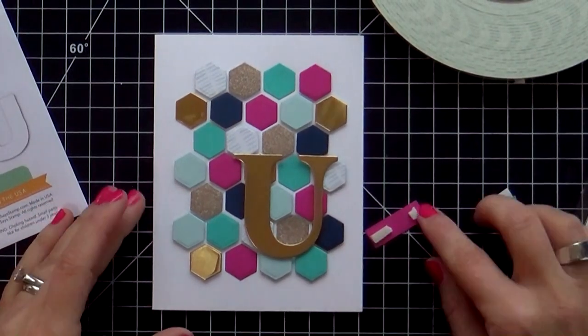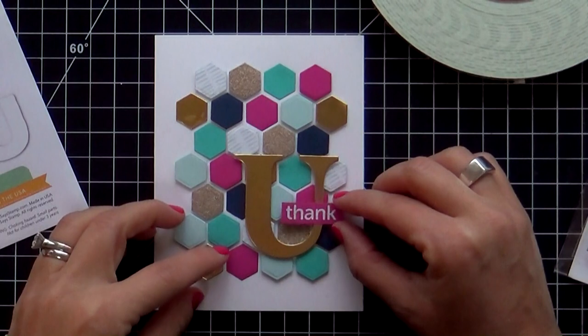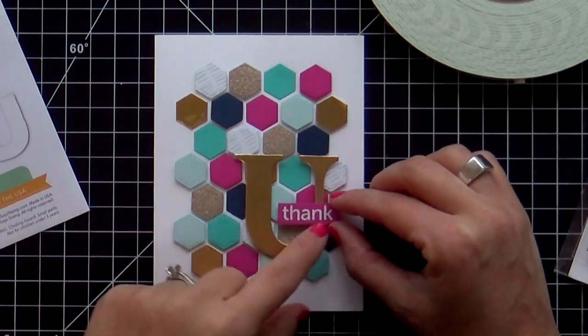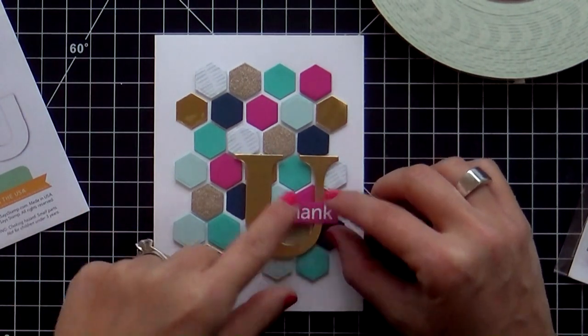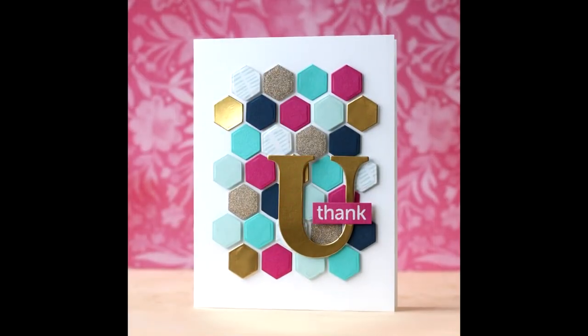And then we got the thank that I embossed on a little sentiment strip of doll pink. I embossed it in white. This thank is from the big U words stamp set coordinates with the big U dies. Oh yes. This is a fabulous release.